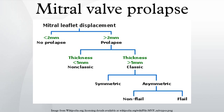Diagnosis: Echocardiography is the most useful method of diagnosing a prolapsed mitral valve. 2- and 3-dimensional echocardiography are particularly valuable as they allow visualization of the mitral leaflets relative to the mitral annulus. This allows measurement of the leaflet thickness and their displacement relative to the annulus. Thickening of the mitral leaflets greater than 5 mm and leaflet displacement greater than 2 mm indicates classic mitral valve prolapse.